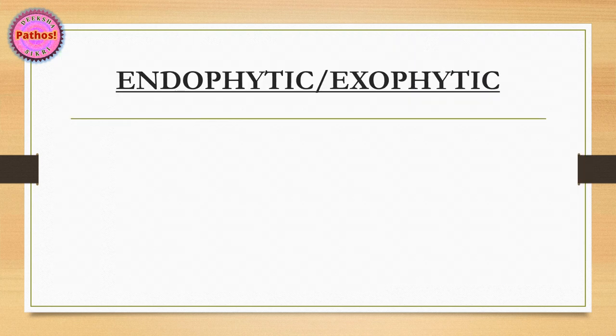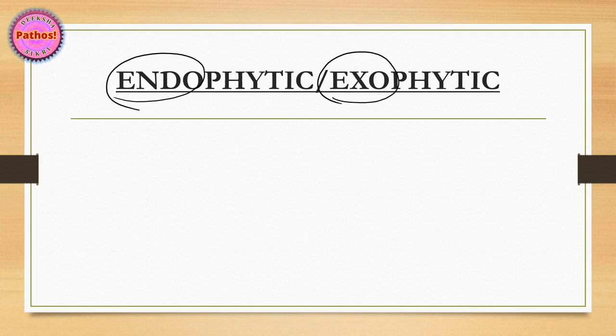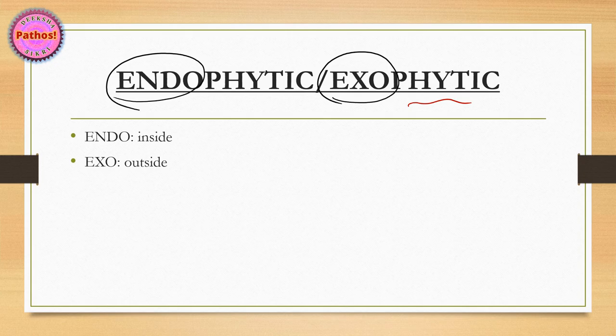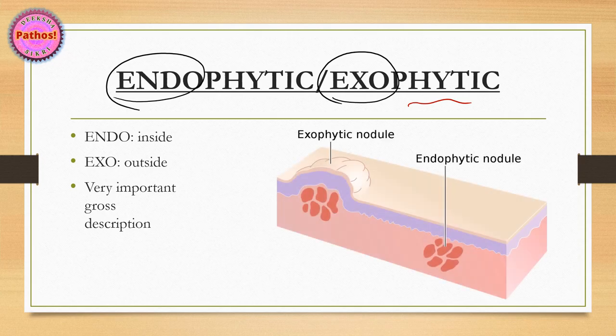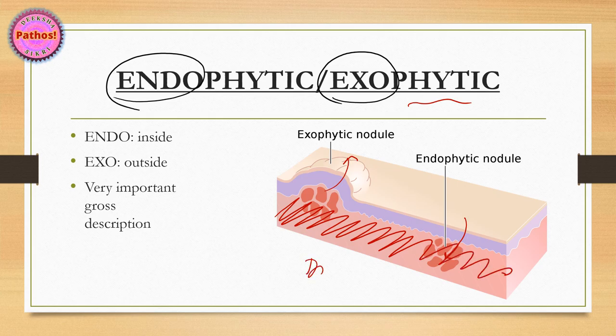Next, I want to talk about two terms, endo and exophytic. Endo and exophytic basically means growth - endo means on the inside and exo means on the outside. These are very important terms used for gross description of any malignancy. You can see that exophytic means it's coming outside and endophytic means it's growing within the wall of whatever the organ it is. And if it was growing everywhere, you would call it diffuse.